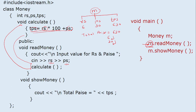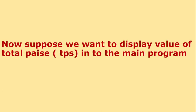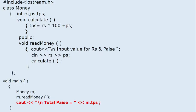Now suppose we have created object M, but the calculated value of total paise — we want it in the main program, maybe for further calculation. We want to display total paise in the main program. If we write a statement like M.totalPaise, this will generate an error because the scope of total paise is not specified, meaning it is private. Private member functions and private member variables cannot be accessed outside of the class.